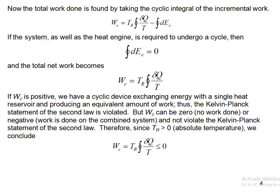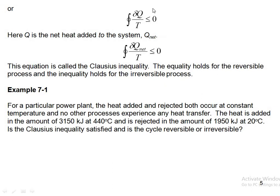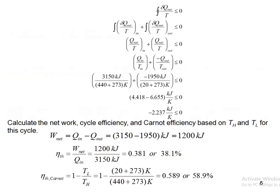It cannot be positive — W_C can be either zero or negative. Since T_R is absolute temperature and thus positive, the only remaining term is the cyclic integral of (δQ / T), which must be less than or equal to zero. Here Q is the net heat added to the system, so the cyclic integral of (δQ_net / T) ≤ 0. This equation is called the Clausius inequality: equality holds for the reversible process and inequality holds for the irreversible process.